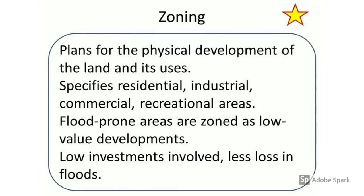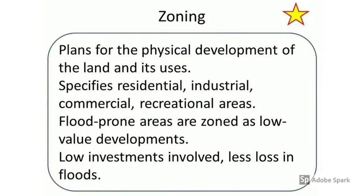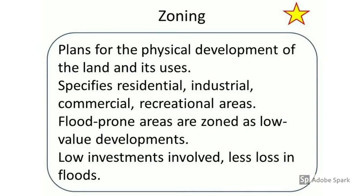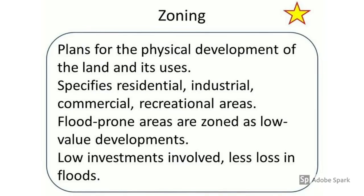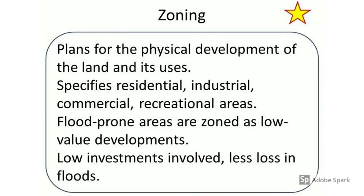A challenge with zoning is applying it to areas already developed. For example, if a family has lived next to a river for 100 years and the government offers compensation to relocate them, they may face intangible costs — deep attachment to their home. While the government can't simply take the land, it often offers higher compensation, making relocation more costly. Zoning is very effective if a city is still being built, but very costly for already-developed cities.